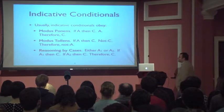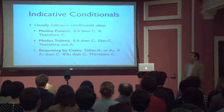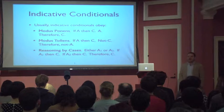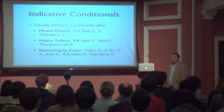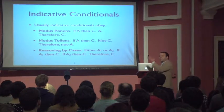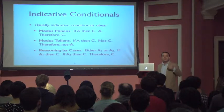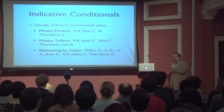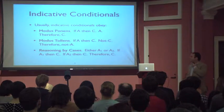Modus tollens is a little bit different: if A is true, then C is true; C is false — in other words, not C is true — therefore A is false, not A. So, if Tom is home, then the lights are on; but look, the lights are off; therefore Tom isn't home. So if the antecedent is true then the consequent is true; the consequent is false; therefore the antecedent is false.